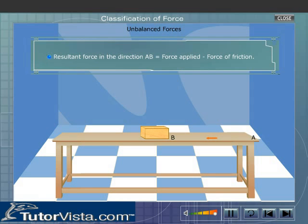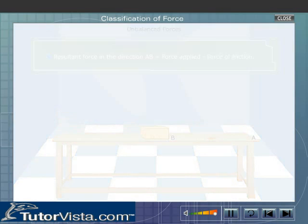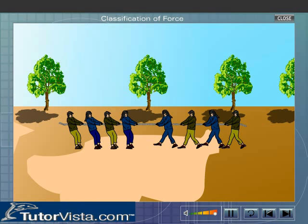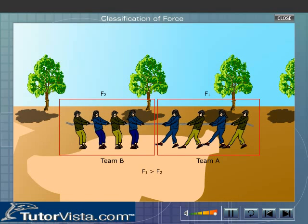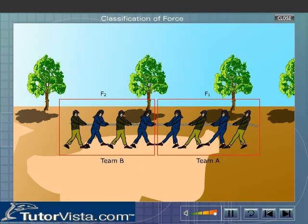Therefore, the resultant force in the direction AB equals the force applied minus the force of friction. Thus unbalanced forces acting on a body produce motion in it. In the game of tug-of-war, if the force applied by team A is greater than that applied by team B, then the rope as well as members of the weaker team B will be pulled towards team A. Thus unbalanced forces produce motion.